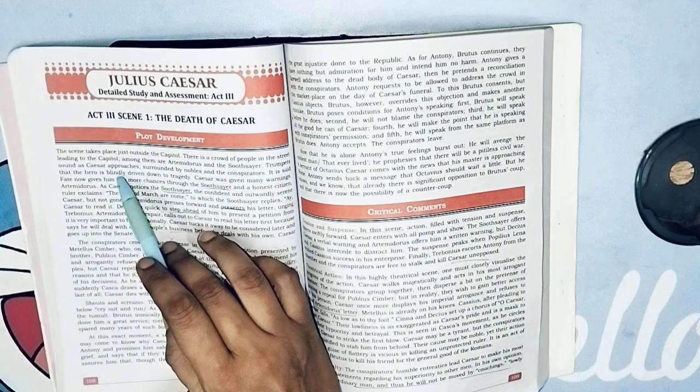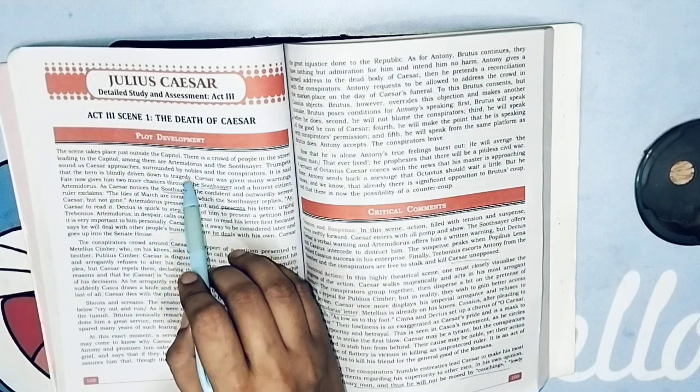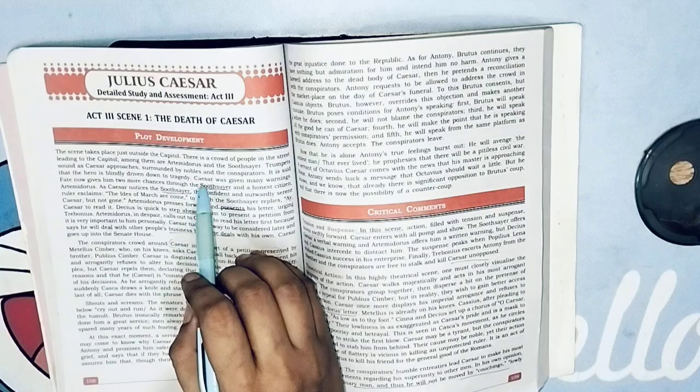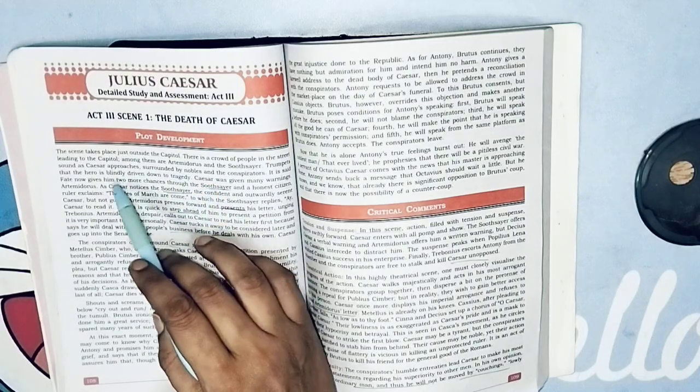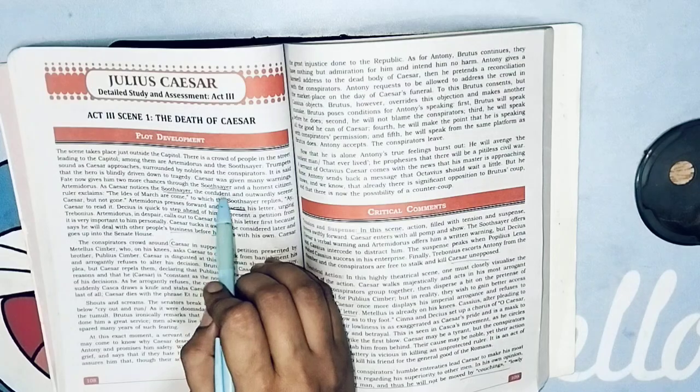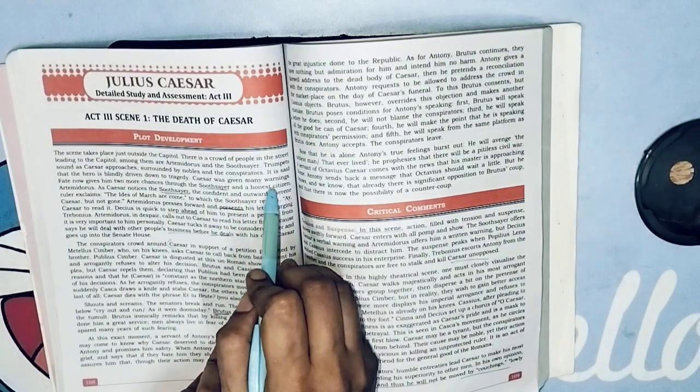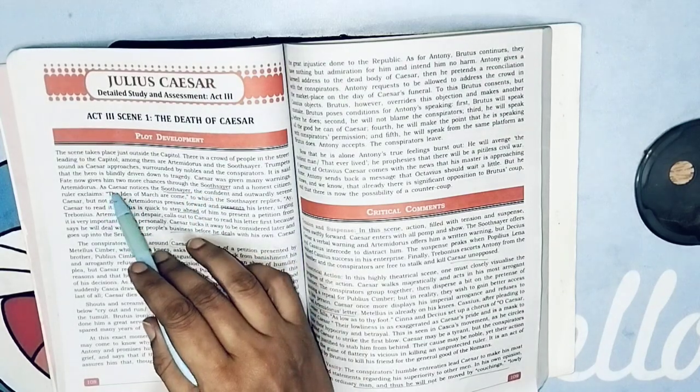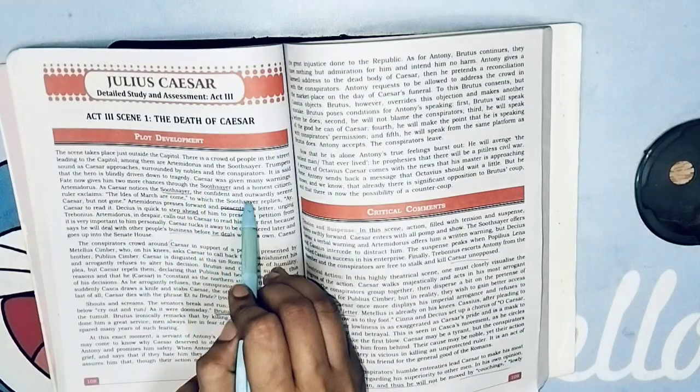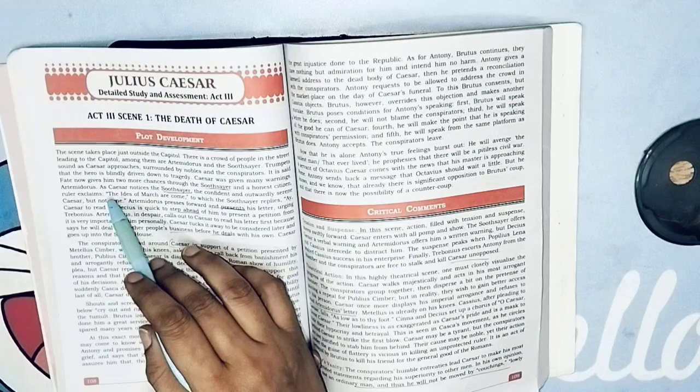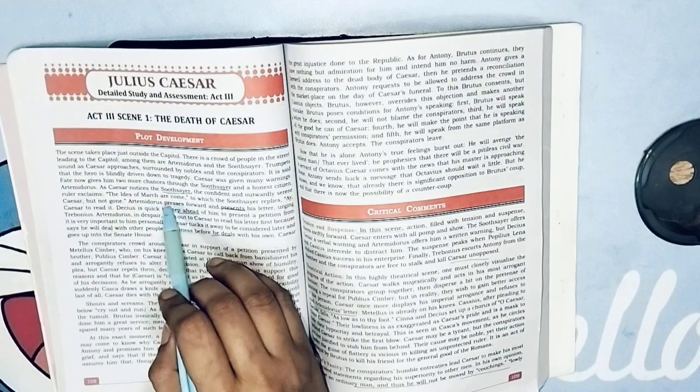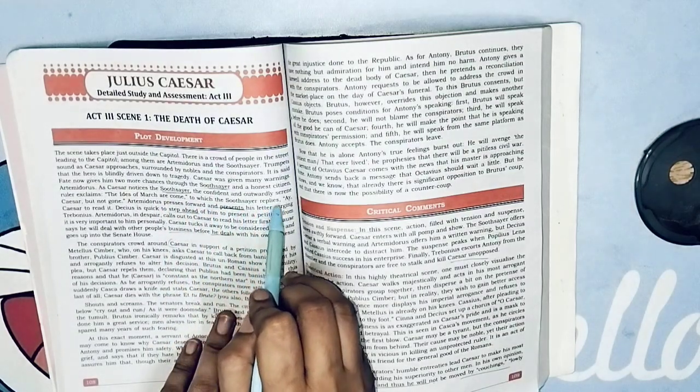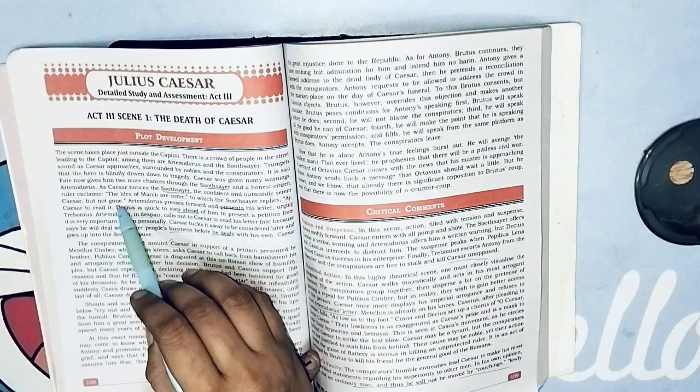It is said that the hero is blindly driven down to tragedy. Caesar was given many warnings. Fate now gives him two more chances through the soothsayer and an honest citizen. As Caesar notices the soothsayer, the confident and outwardly serene ruler exclaims, "The Ides of March are come," to which the soothsayer replies, "Aye Caesar, but not gone."